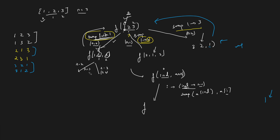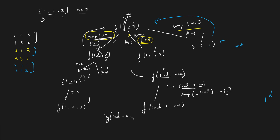The next recursion call moves the pointer to the next index. The base case is when the pointer reaches n — at that moment, whatever array we have is part of our answer. The intuition behind swapping is simple: we are trying every number at a particular index by bringing the right elements to the current index through swapping.